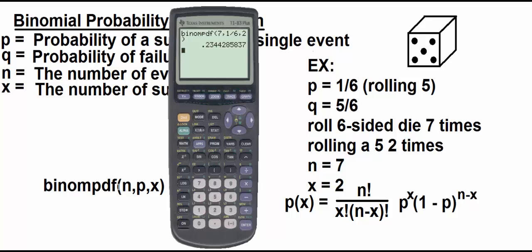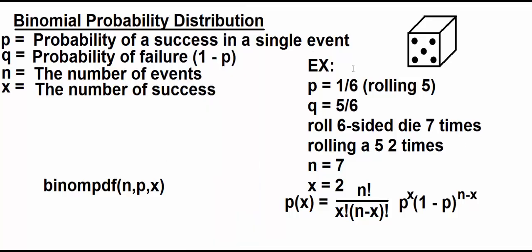So I already used the calculator to calculate a binomial distribution probability. But we're going to look at a slightly different problem now. Let's go back to this example. And now, let's say, instead of getting a five two times, let's say I get a five two times or less.